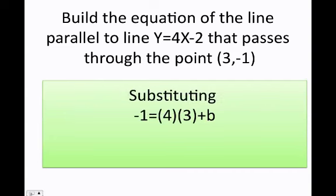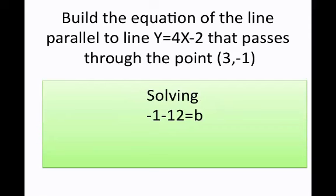Now that I have that, I can just go ahead and start substituting. x is going to equal 3. The slope equals 4. y equals negative 1, and that's it. I need to just go ahead and solve for b. Let's start doing it. And once I do it, I get that b equals negative 13.